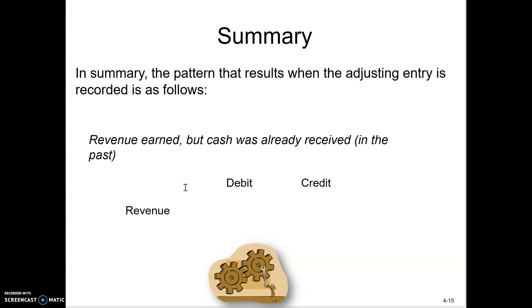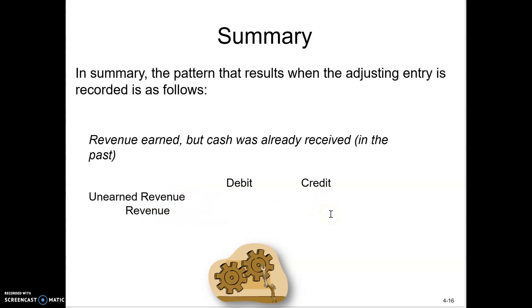The next type of adjusting entry is deferred revenue: the revenue has been earned and the cash was already received in the past. We did the work, so we credit our revenue account. What do we debit? When we get cash before doing the work, we call that unearned revenue — a liability. So when we do the work later, we debit unearned revenue because that liability goes down, and we credit service revenue because now we've earned it.